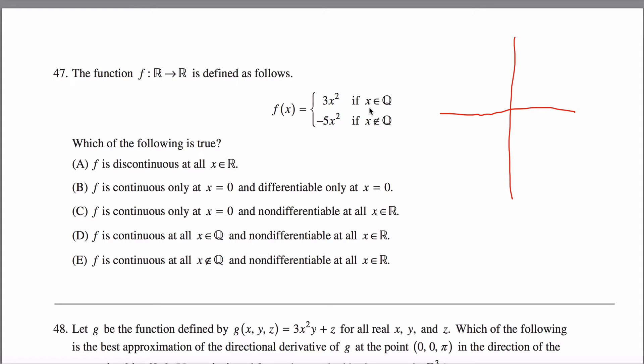So if your input is a rational number, your graph is 3x squared, so you have this kind of standard parabola. These are all the rational numbers stretched upwards a little bit, so you get a graph that looks something like this.